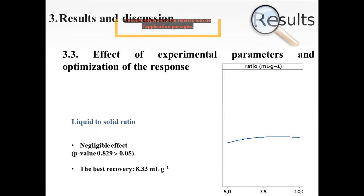Now, the third parameter, which is the liquid-to-solid ratio. Its impact on the celery phenolic compounds recovery was found to be negligible. And after optimization, the best recovery was 8.33 milliliters per gram.